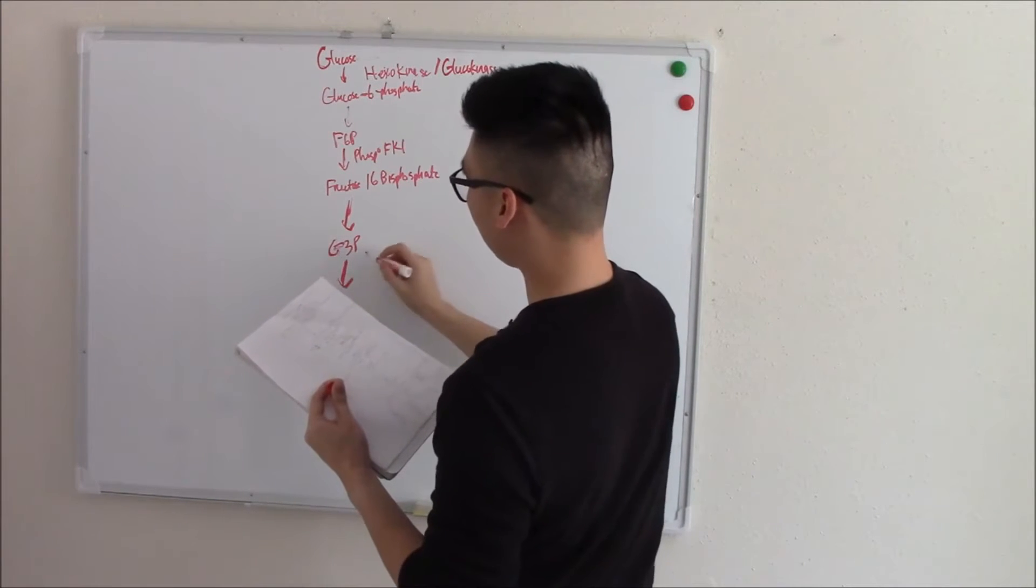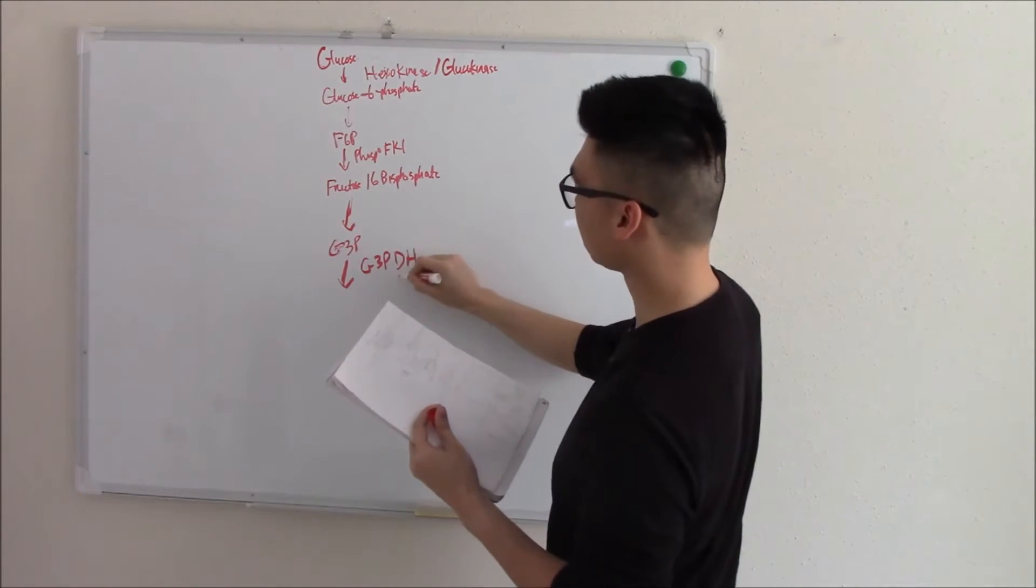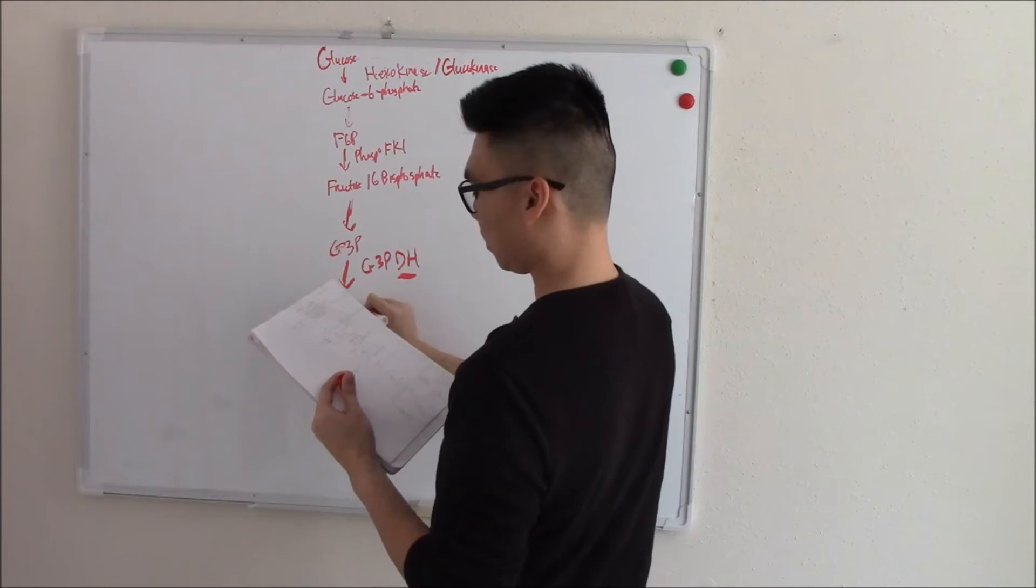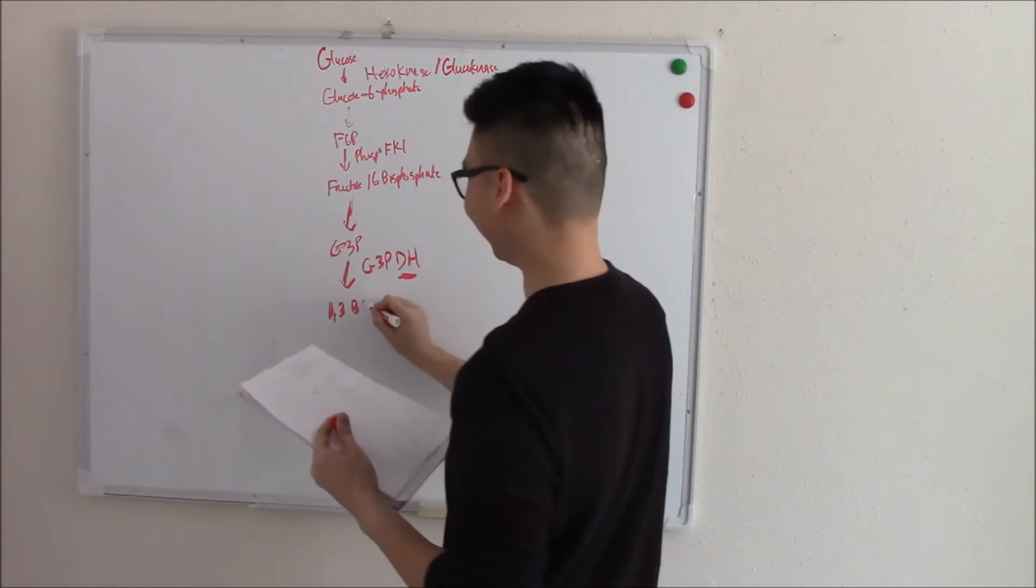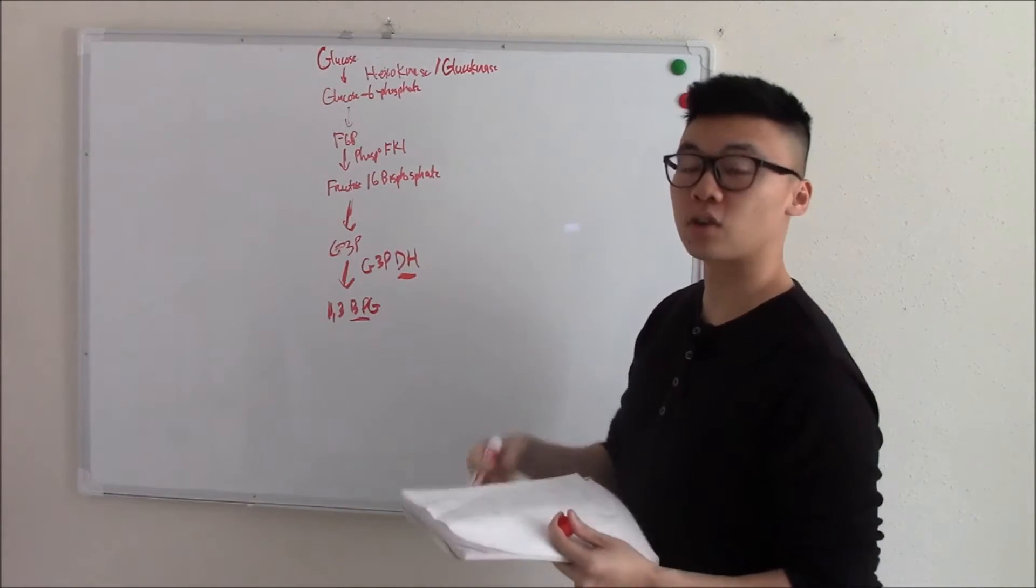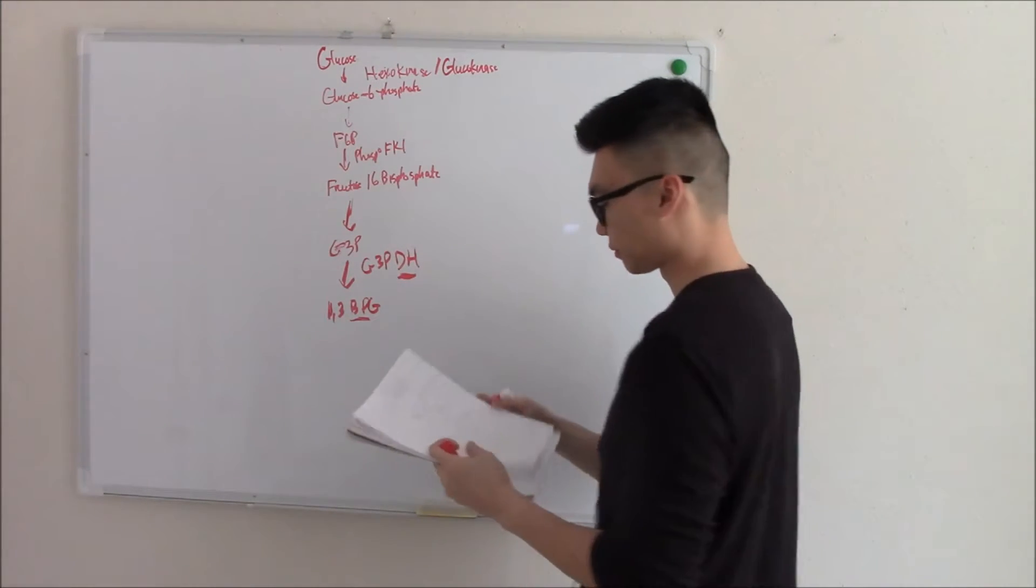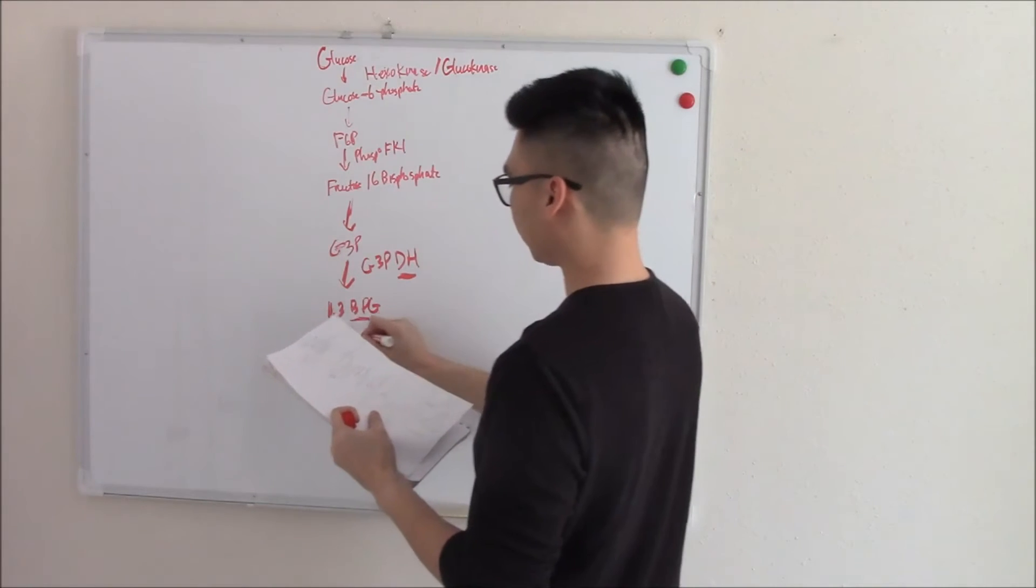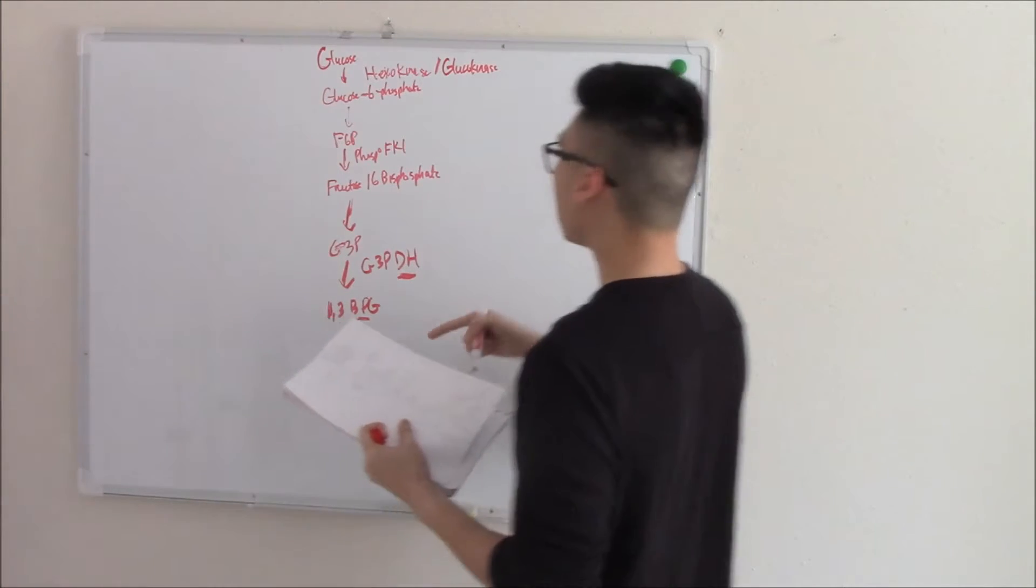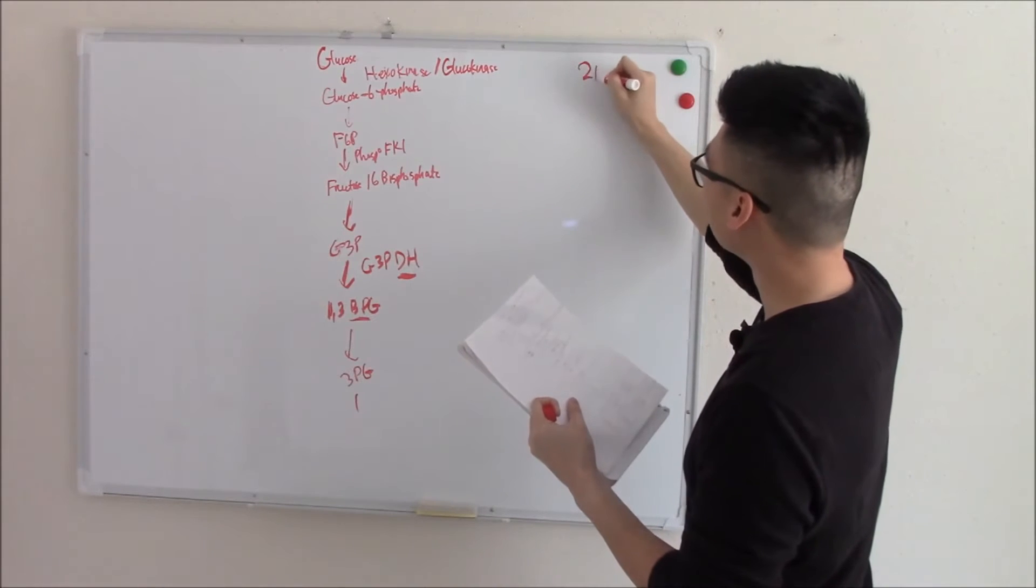That later becomes glyceraldehyde-3-phosphate. And with its friend glyceraldehyde-3-phosphate-dehydrogenase, it becomes 1,3-bisphosphoglyceric acid. Again, very important to know what the abbreviated words stand for. I'm just going to say it and then write it abbreviated, but again, know both. From 1,3-BPG becomes 3-PG. We're almost there. This will be a continuation from 3-PG to 2-PG.